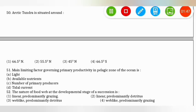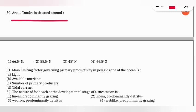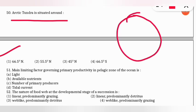The next question: the Arctic tundra is situated around which latitude? The correct option is option 1 — the Arctic is in the North Pole, so the correct answer is 66.5° North latitude.